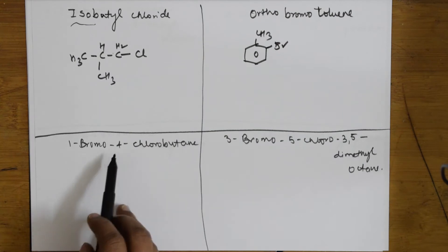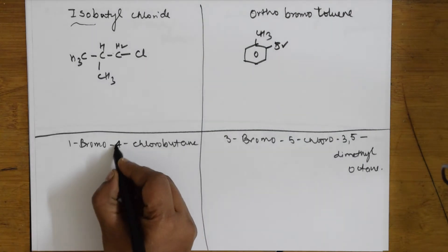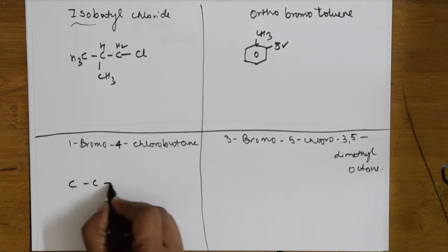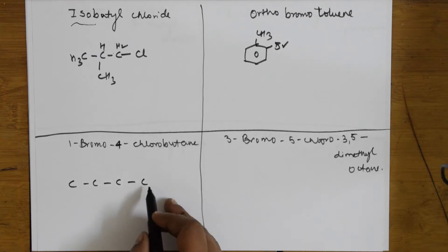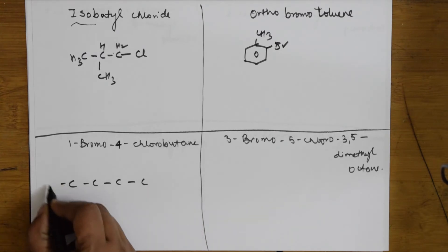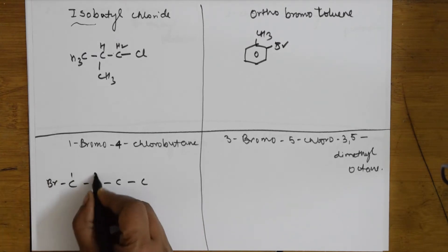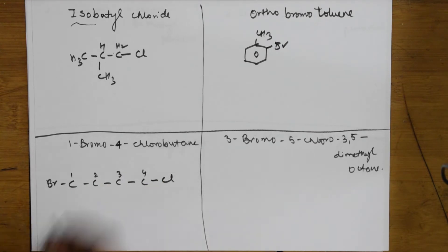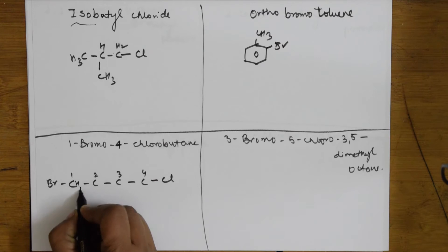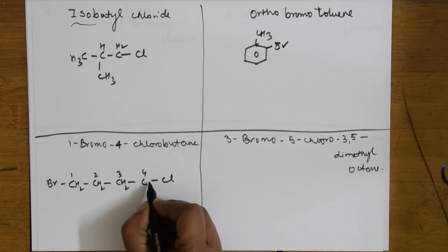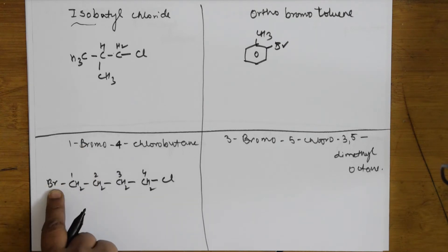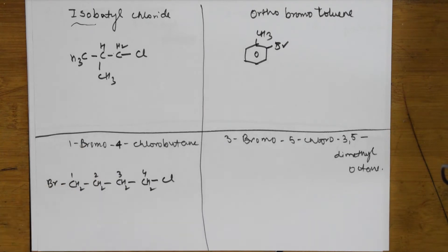Now suppose they give me 1-bromo-4-chlorobutane. The parent chain is butane: one, two, three, four. At the first position there is bromo — alphabetical order makes bromo come first — and at the fourth position there is chloro. Fill the hydrogens: CH₂ groups throughout. That's it.